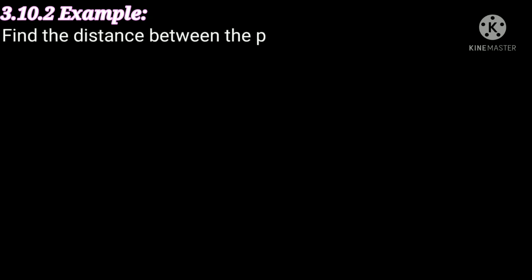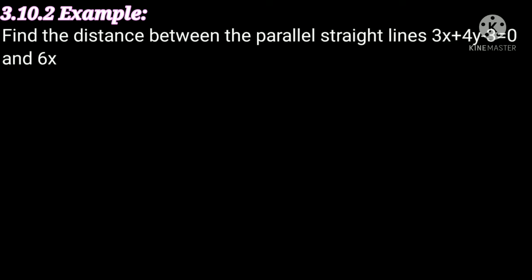The straight line 3.10.2 example problem is: find the distance between the parallel straight line equations 3x plus 4y minus 3 equal to 0 and 6x plus 8y minus 1 equal to 0. This is our given problem. In this problem solution, we have to find the distance between the given parallel lines. Now we will solve the problem.